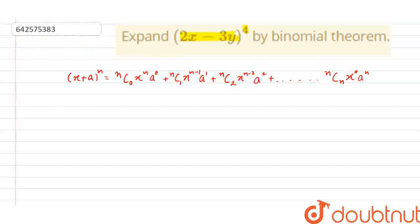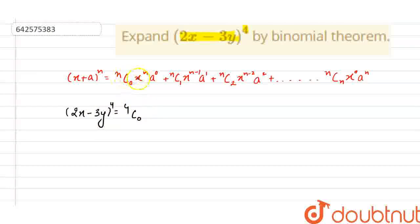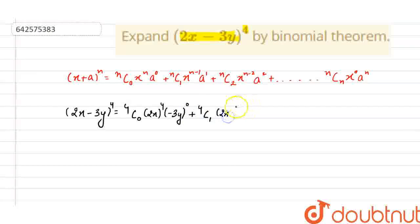As given in the question, we have to expand (2x minus 3y) whole raised to power 4. We will expand this using the binomial theorem as: 4C0 · (2x)^4 · (-3y)^0, then the second term is 4C1 · (2x)^3 · (-3y)^1.